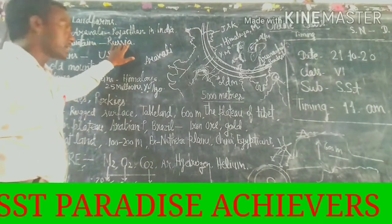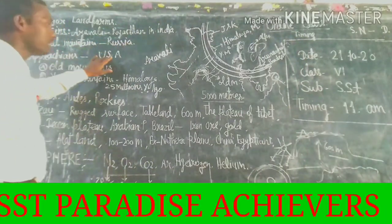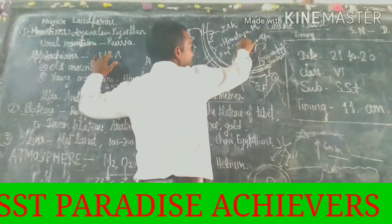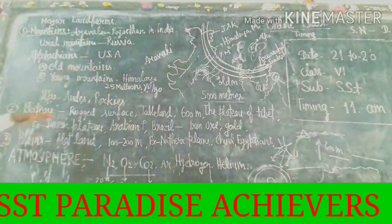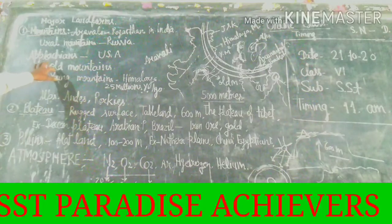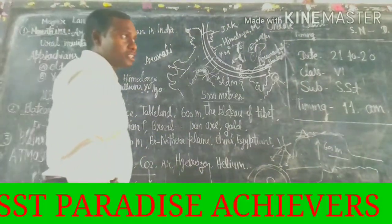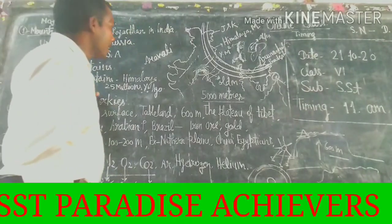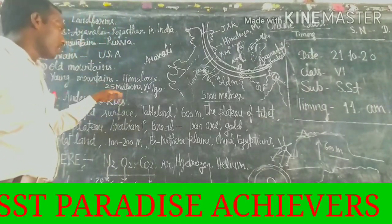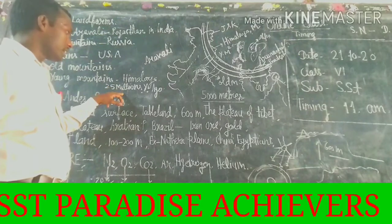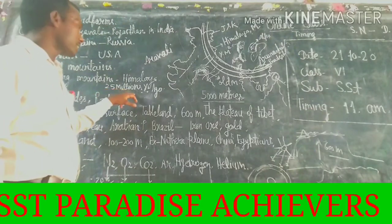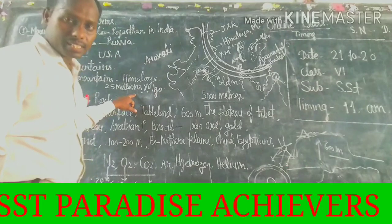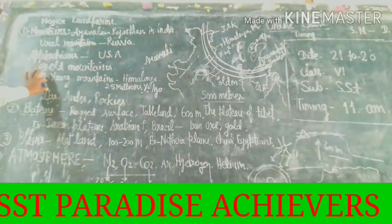The Ural Mountain is in Russia, and the Appalachian Mountain is in the USA, United States of America. The Ural Mountain has been formed by the latest geographical features, and it was formed naturally 25 billion years ago.